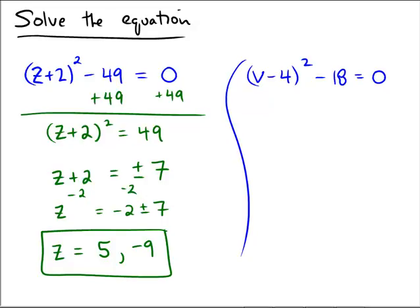Okay, on the right, let's try that again. Add 18 to both sides of the equation, so that (v-4)² = 18.